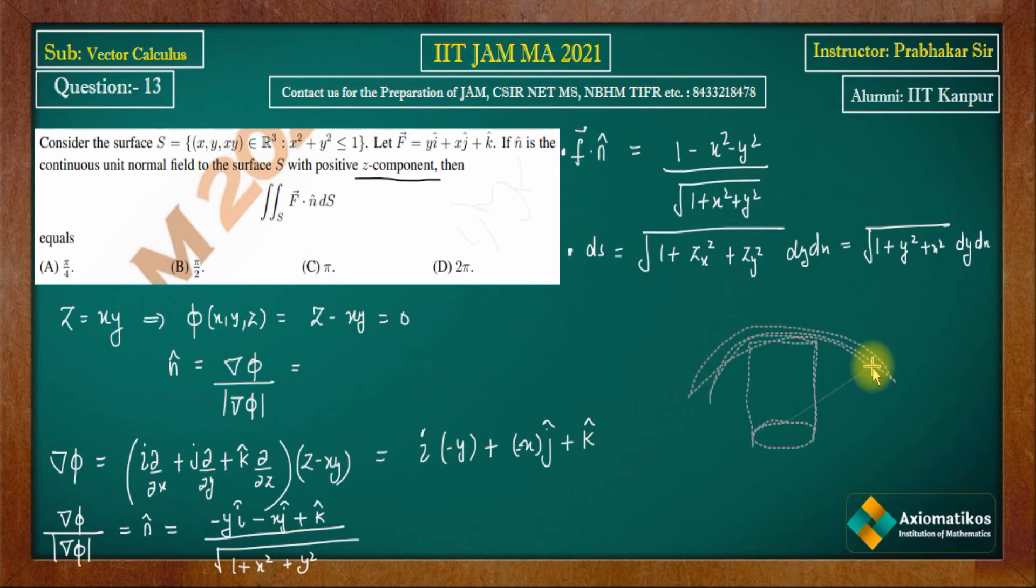But whatever it is, whenever restriction is given on the base, then when you take the projection on the base, x² plus y² equals 1, the circle will come. So when you see the projection, then how much will it be? x² plus y² equals 1. That means your surface integral.